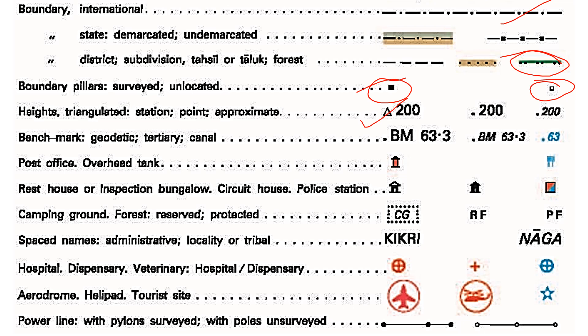This is triangulated height — height measured with the help of trigonometry. Spot height is a random point taken to show the slope of the land. Suppose a river is flowing and an arrow is not there but you want to know which way the river is flowing — you can use spot height. Benchmark is BM — it shows the height, and all these heights are from sea level, in meters. The benchmark height is written on a plate fixed to a cemented ground or a pillar.